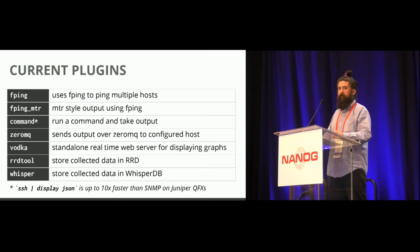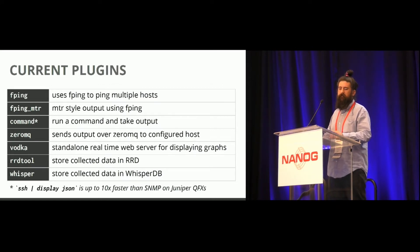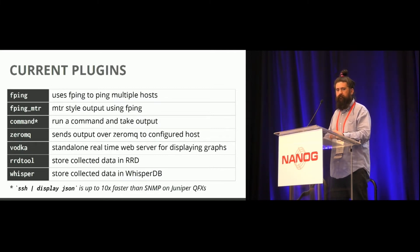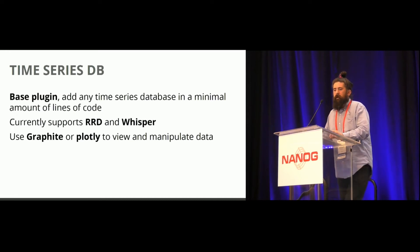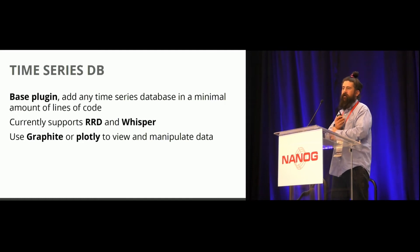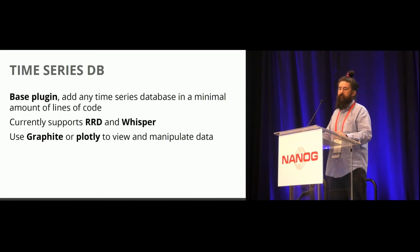Vodka is a plugin that's a real-time stateful web server — it's a daemon designed for high performance with multiple messages per second. And then RRDTool and Whisper are available for time series storage if you want to store and query the data elsewhere. We don't currently graph anything from the database directly, but you can use Graphite or Plotly really easily if you want to query it.